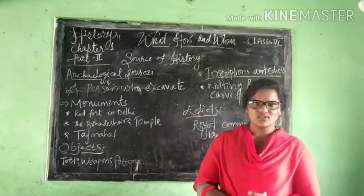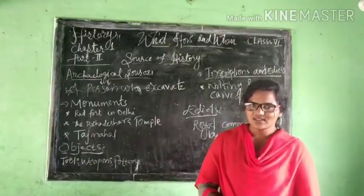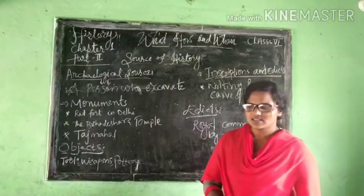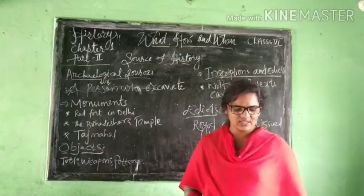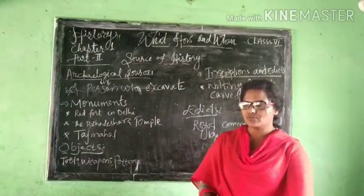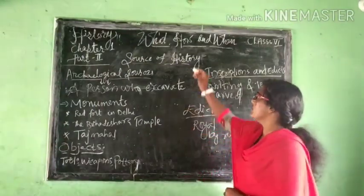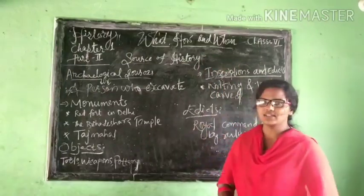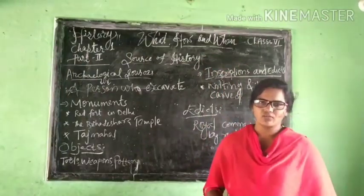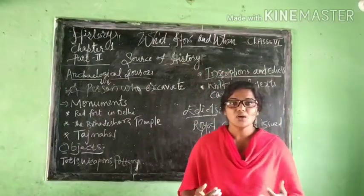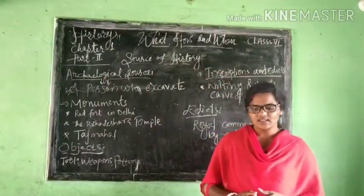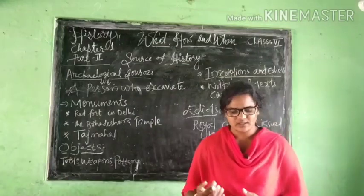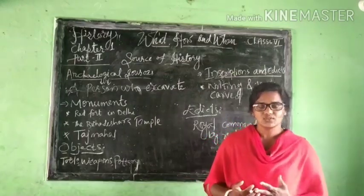We have started the first lesson. So what was the name of your first lesson? As I have written here, the name of your first lesson is 'What, How and When.' In the first chapter, we learned about what is history.